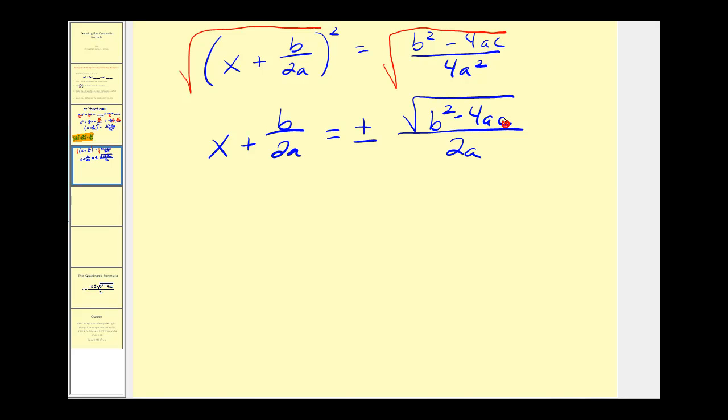We're one step away now. We'll just subtract B over 2A on both sides of the equation. So we have X equals negative B over 2A plus or minus the square root of B squared minus 4AC, all over 2A.